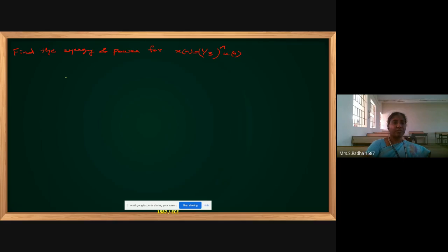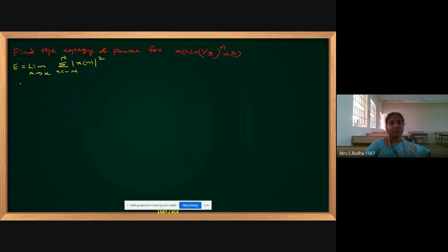For power calculation for discrete time, we have to proceed step by step. First, I will go with the energy calculation for this given signal. The formula for energy is: limit as N tends to infinite, summation where small n varies from minus N to plus N of modulus of x(n) squared. Now this becomes limit N tends to infinite, and if you see, the given signal is...